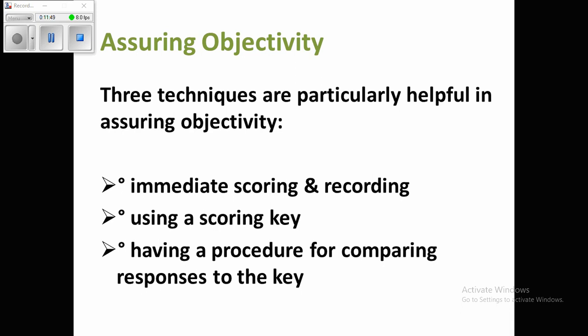The first technique is immediate scoring and recording. If you want to ensure fairness, you can score the test on the spot. Once you have the papers, you score all the papers and then record the scores. The second technique is using a scoring key: before checking the papers, a scoring key should be prepared so that papers can be checked against it consistently, reducing the chance of teacher error.